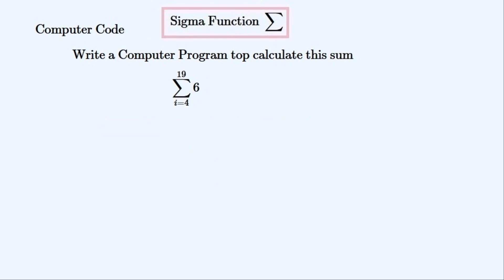And here's the final example, how to write a computer program to evaluate this sum in sigma notation. We'll set up the loop to go between the bounds of i and increment i by one each time it goes around the loop. And then we'll add six each time which is the body of the sigma sum.